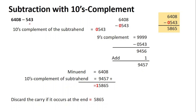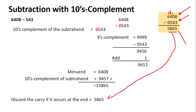Let's verify manually: 6408 minus 543. Eight minus three is five, carry — ten minus four is six, carry — thirteen minus five is eight, carry — five minus zero is five. The result is 5865. Comparing with the tens complement result 5865 — the answer tallies.